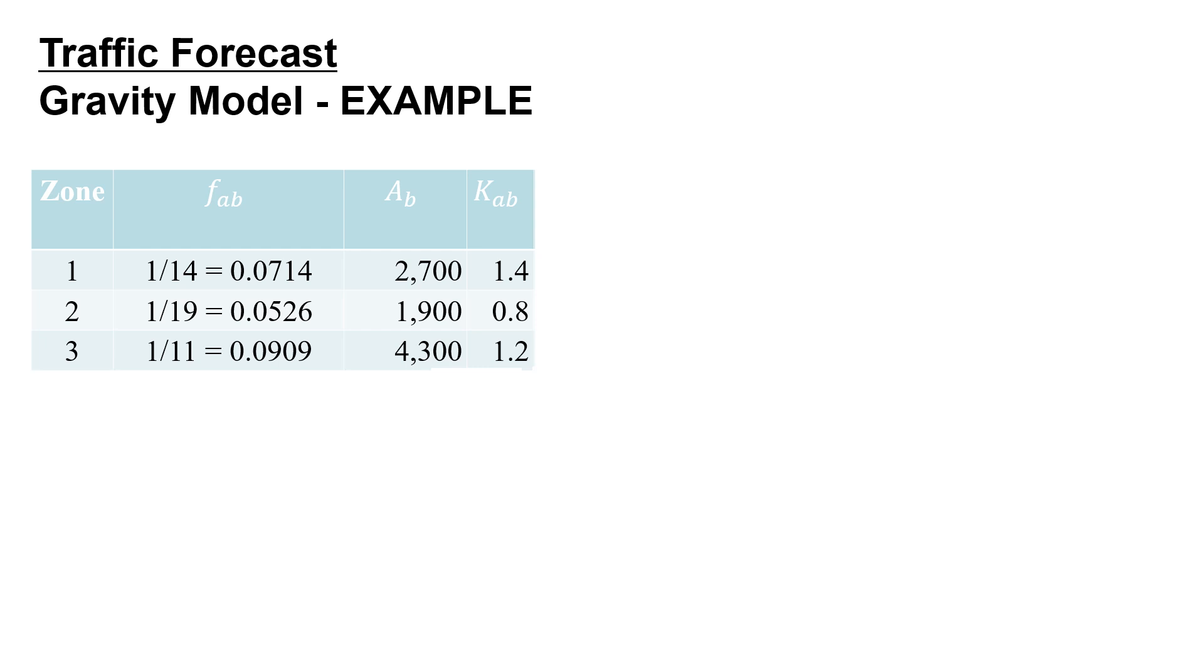Our next step is to multiply each of these three together. So we're just multiplying each of these to arrive at this new column. We have 270 for zone 1, 80 for zone 2, and 469.09 for zone 3.